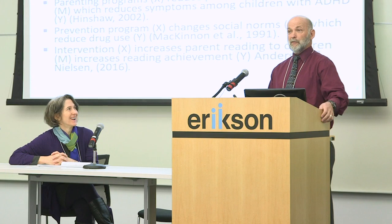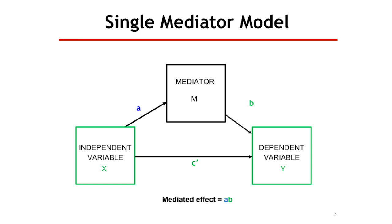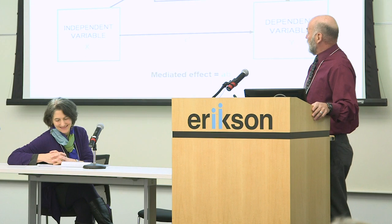Here's the single mediator model in diagram form. There are three ways to represent a model: verbally, which is entertaining but not specific enough; with a diagram; and the most precise way, with equations. In the mediator model, an independent variable causes a dependent variable, but part of that effect is through a mediator variable. The mediator effect in an analysis is taken as the product of the regression coefficient for A times the regression coefficient for B.